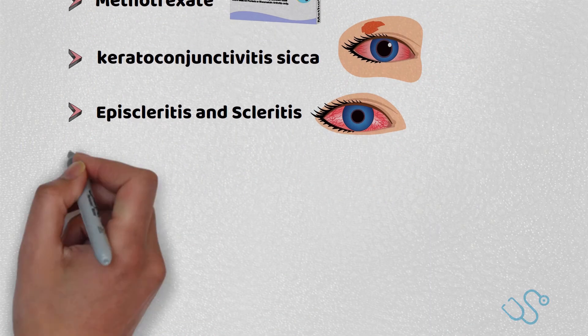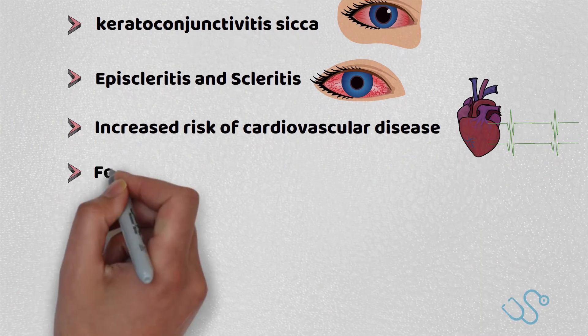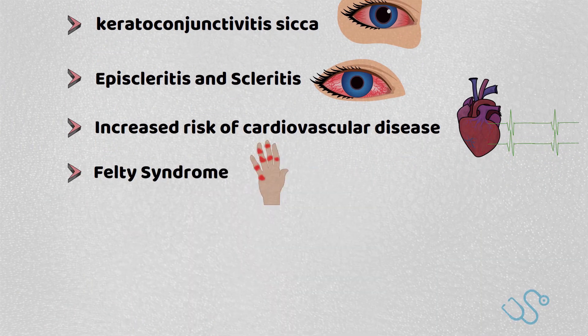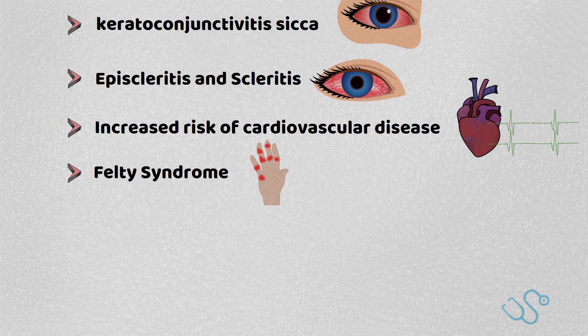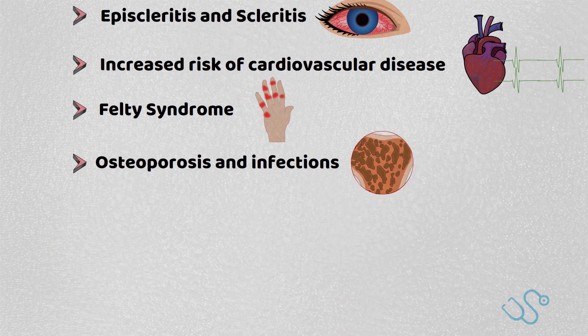There's also an increased risk of cardiovascular disease. Classically, in exams, you may be examined about Felty syndrome, an extremely rare condition comprising rheumatoid arthritis, splenomegaly, and leukopenia. There's also a higher risk of developing osteoporosis and infections.